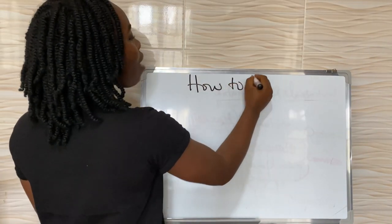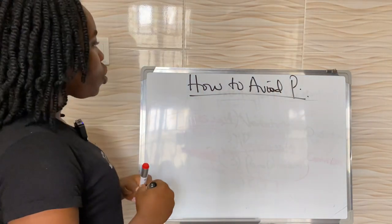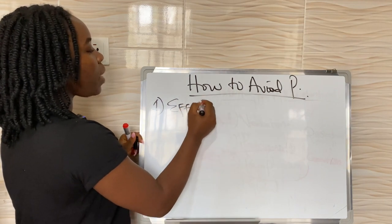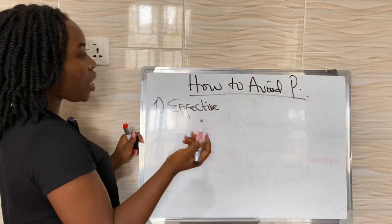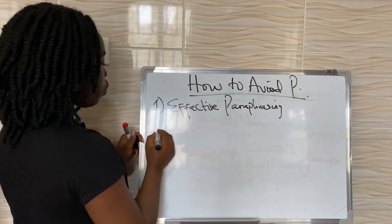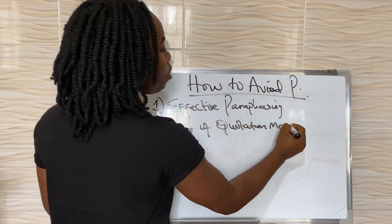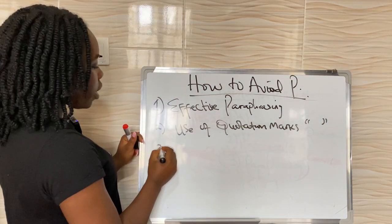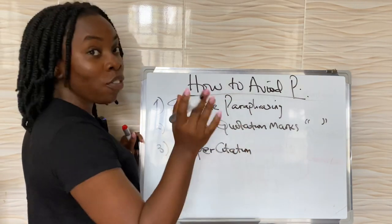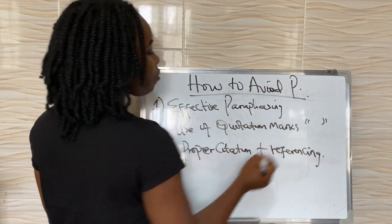So now let's talk about how to avoid plagiarism. The very first way is through effective paraphrasing. Remember, one of the examples of plagiarism is paraphrasing plagiarism, so the way to avoid it is effective paraphrasing. The second way is the use of quotation marks — also known as speech marks. And the third is proper citation and referencing. These are the three ways to avoid plagiarism.